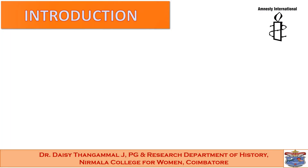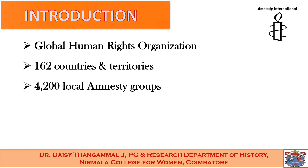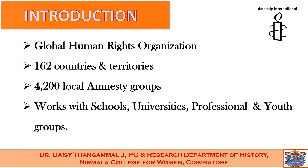Amnesty International has grown into a global human rights organization. According to one estimate, it has around 1 million members and subscribers in 162 countries and territories. There are over 4,200 local Amnesty International groups worldwide and several thousand more schools, university, professional, and youth groups in more than 80 countries. Amnesty has established a large number of groups to coordinate the work of its various international networks and members.